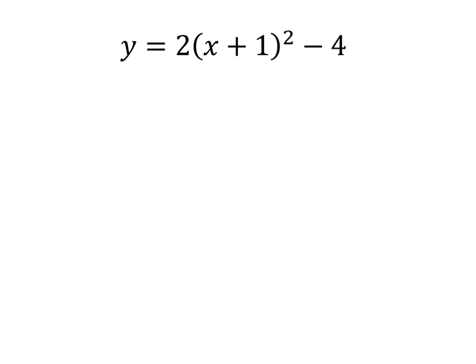So looking at this one, if we want to identify what your vertex is, your vertex will be at negative 1, negative 4. Again, it's going to be the opposite of that sign. So since it's plus 1, it's going to be minus 1, and then minus 4. And so that is your vertex form, and there is your vertex.